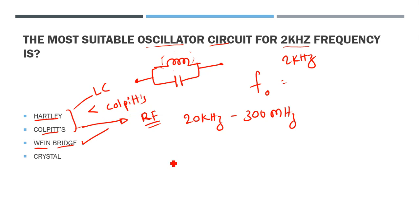Colpitts oscillators are used for RF applications - radio frequency applications. Radio frequency range is 20 kilohertz to 300 megahertz. Hartley oscillator has lesser frequency range than Colpitts oscillator. Crystal oscillators use piezoelectric crystals.